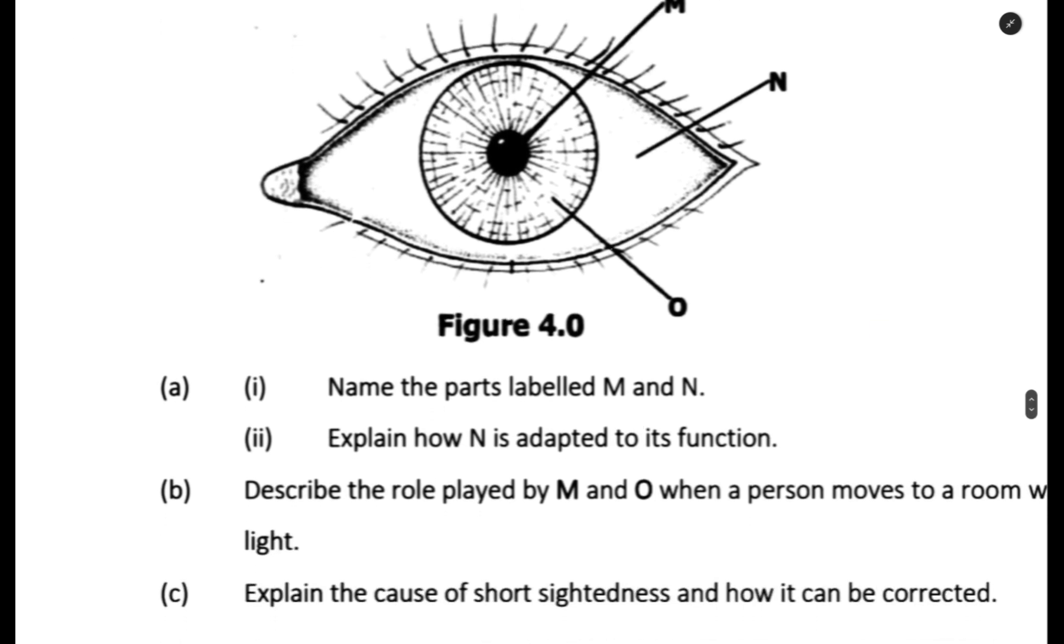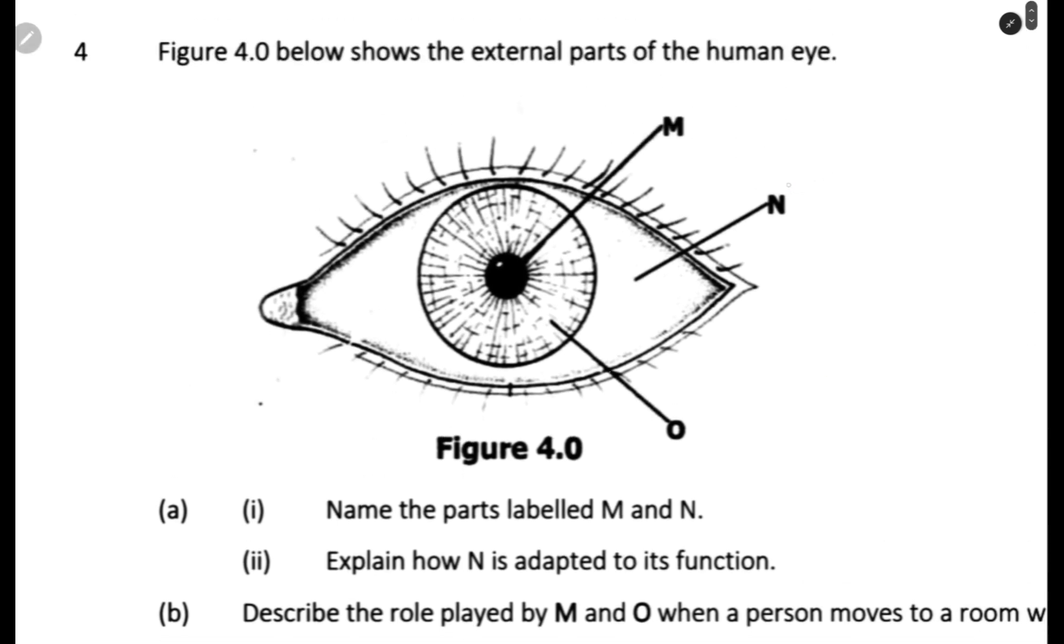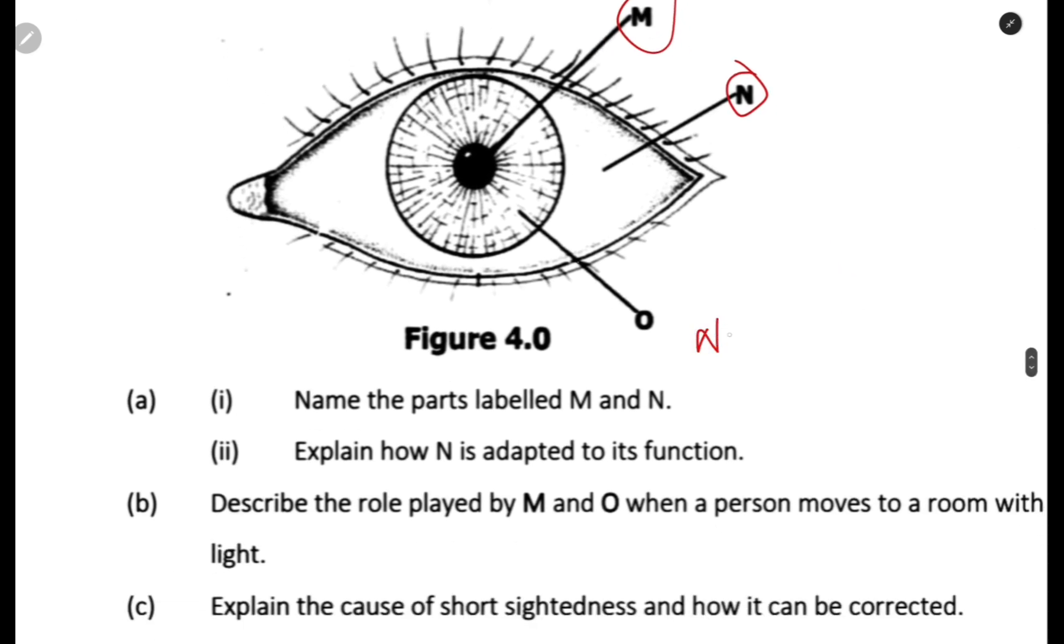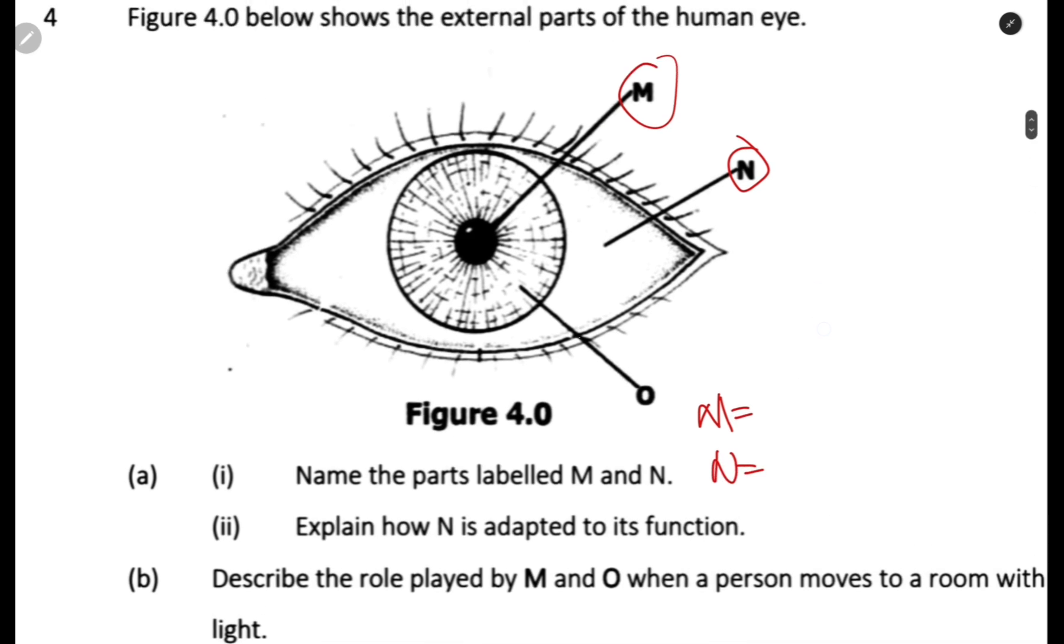The first question is A of Roman numeral 1 or A1. Name the part labeled M and N. So what is the part labeled M and N in this case? So the parts here, let me just write here, M and also N. So as you can see from M, it's pointing at this dark part here in the middle, which is the pupil. So that is the pupil. Then of course, the other one, which is N, is the cornea, the white part is the cornea.